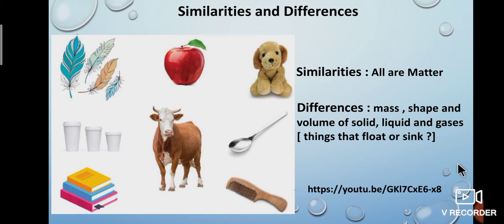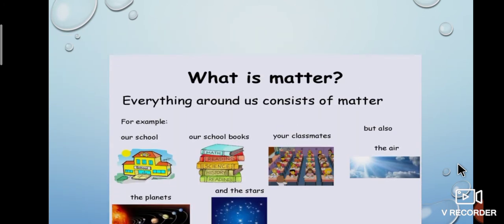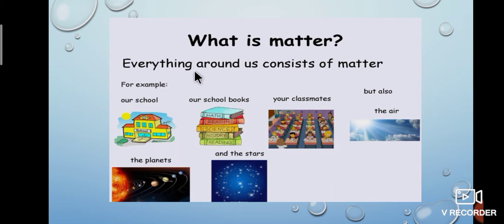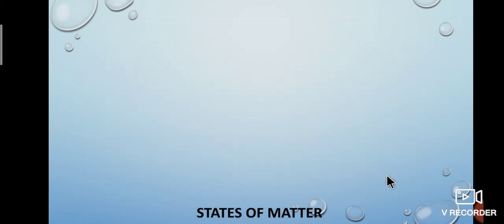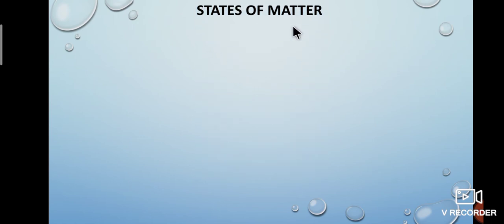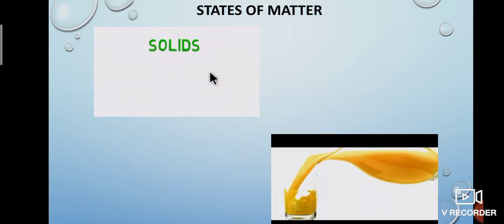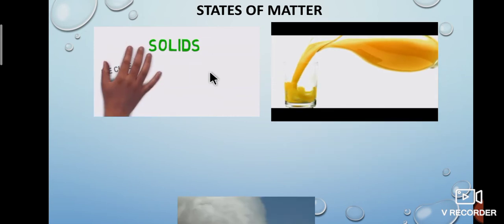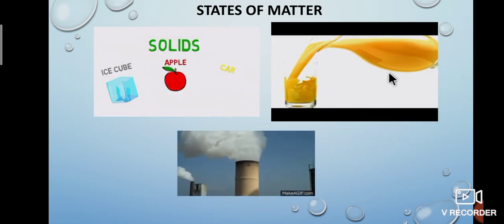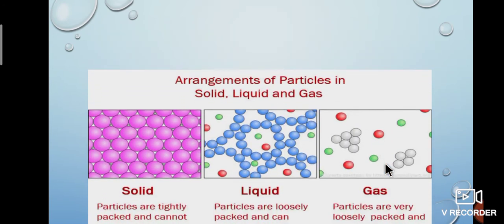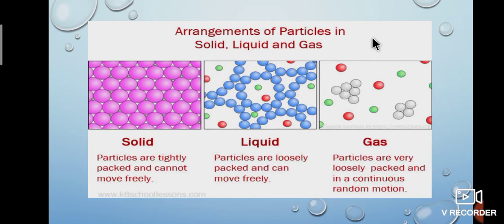Once again, what is matter? Everything around us consists of matter — our school, books, classmates, air, planets and the stars. Now we will learn about the arrangements of particles in solid, liquid and gas. See the picture below.